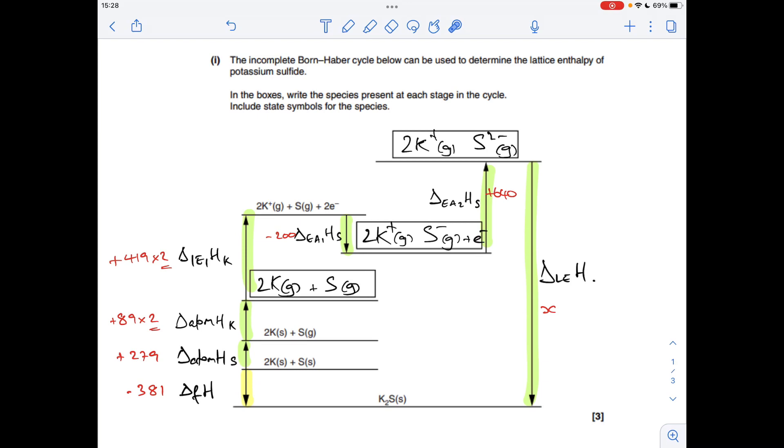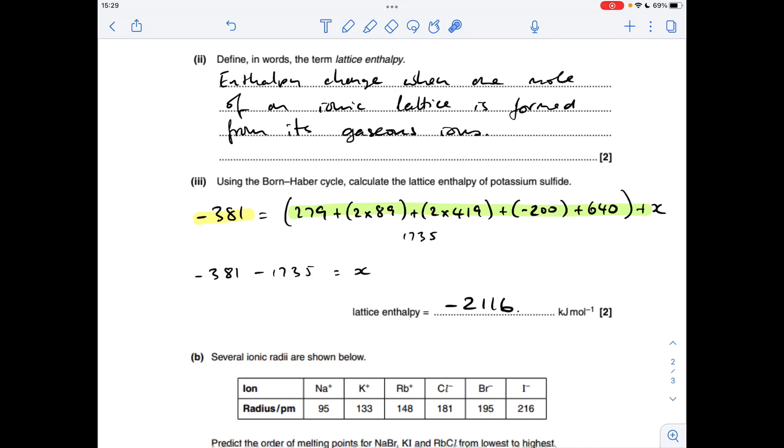So all we need to do is put the numbers in and solve for X now. So you should get a lattice enthalpy of minus 216 kilojoules per mole.